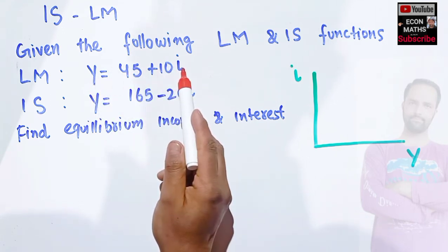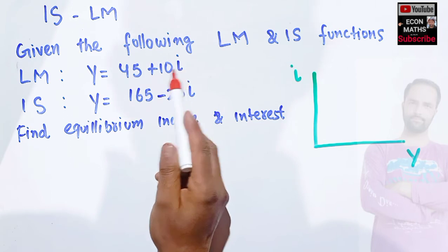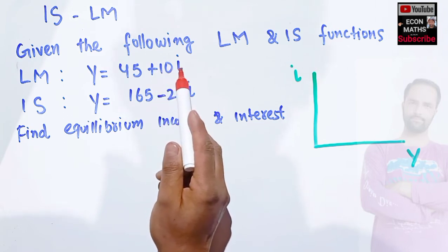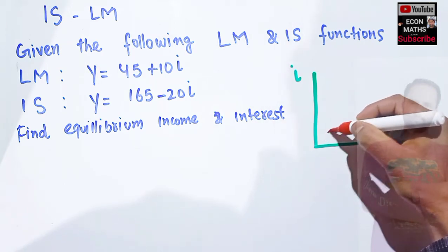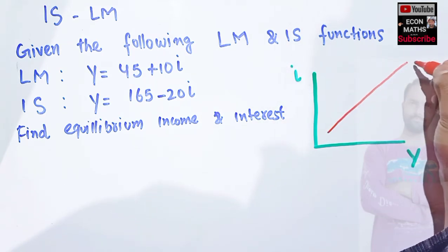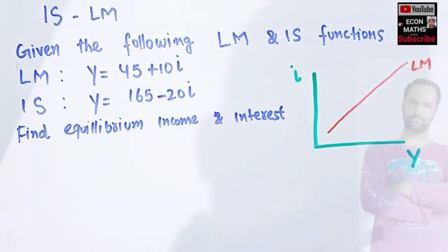Here you can see that there is a positive relationship between level of income and rate of interest because the coefficient of i is positive. So it will look like this. This is our LM function, and you can check it, it's very simple.